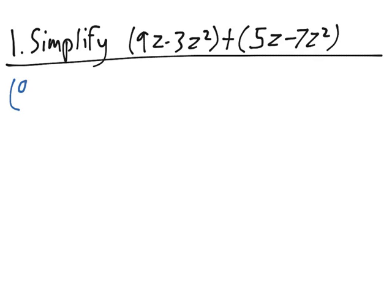Let's start by writing this out. 9z minus 3z squared plus 5z minus 7z squared. Now if we rearrange the terms,